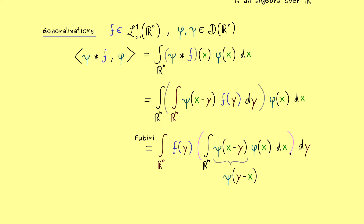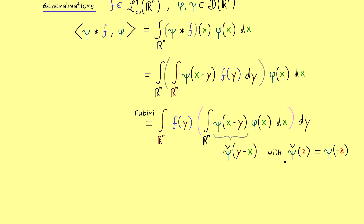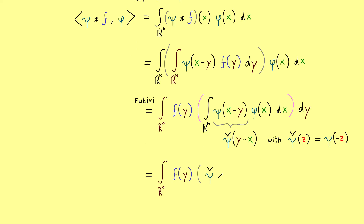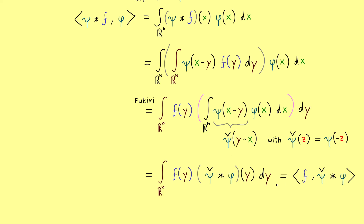We define a new function to handle that and call it psi with a rotated head — psi-check. This check notation just means we add a minus sign for the input: if we use z as a variable, psi-check of z equals psi of minus z. This check operator is not complicated at all, and it allows us to write down a second convolution here. The input variable is now y, and we can rewrite this integral as an inner product: simply f together with this convolution — psi-check star phi.